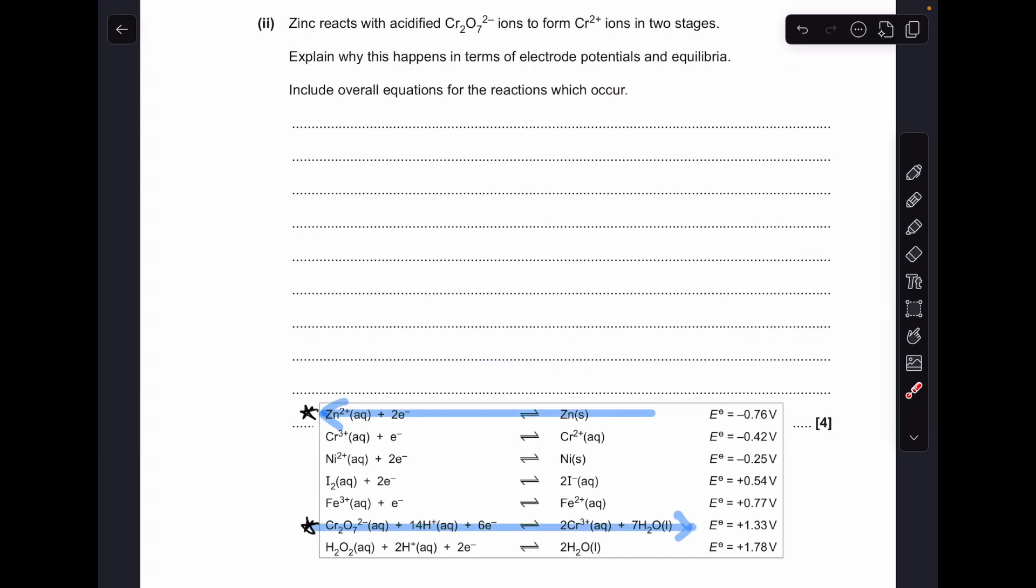And then moving on to part 2, we've got to explain why zinc reacts with acidified dichromate 6 ions to form chromium 2 plus in two stages. I've already highlighted the two half equations we're interested in at first. You can see that the dichromate 6 half equation is going to run in the forwards direction because it's got the more positive electrode potential, which means the zinc one is going to run in reverse.